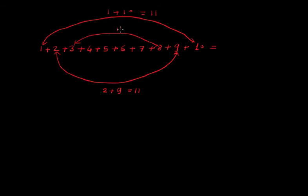So you have 11, 4 plus 7, so again 11, 5 plus 6 is again 11. So here we have 1, 2, 3, 4, and 5. So this will become 11 into 5 equal to 55.